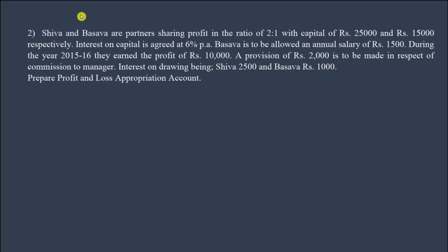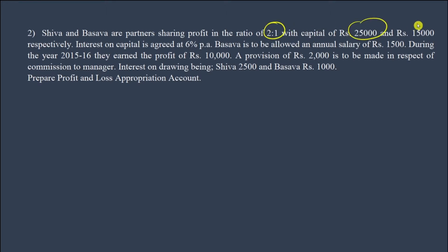Welcome back to the series on Accountancy Chapter 2: Accounting for Partnership Basic Concepts. The problem starts simple and gets more complicated. Shiva and Baswa are partners with a profit sharing ratio of 2 is to 1. Their capital investments are 25,000 and 15,000 respectively.